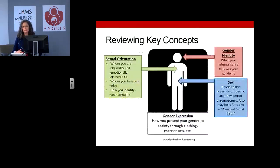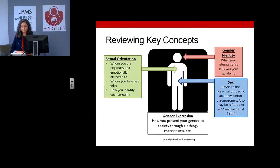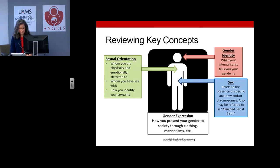Reviewing some key concepts: sexual orientation describes whom you are physically and emotionally attracted to, whom you have sex with, or how you identify your sexuality. That is separate and distinct from gender identity, which is what your internal sense tells you your gender is — this may or may not match your assigned sex at birth. Sex refers to the presence of anatomy or chromosomes. Gender expression is how you portray your gender identity and present yourself to society through clothing, mannerisms, and other ways.